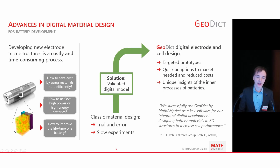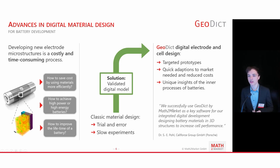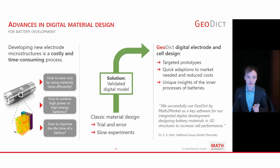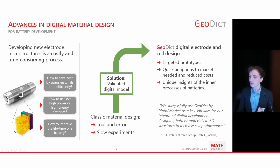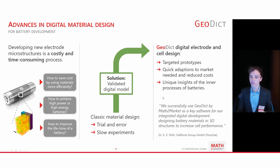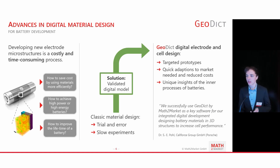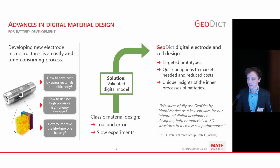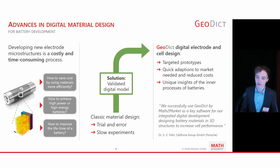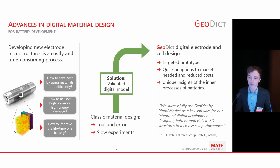Digitally, we have certain algorithms available in GeoDict to improve batteries and especially the electrode microstructure, which is usually very costly and time consuming in real-world experiments. This is the first point where you start saving costs — the material design itself and the validation of whether an approach improves your battery. With GeoDict, you have several options to improve prototyping using our powerful structure generators, and you can quickly adapt to market needs, for example by reducing material used in batteries while maintaining the same battery performance.